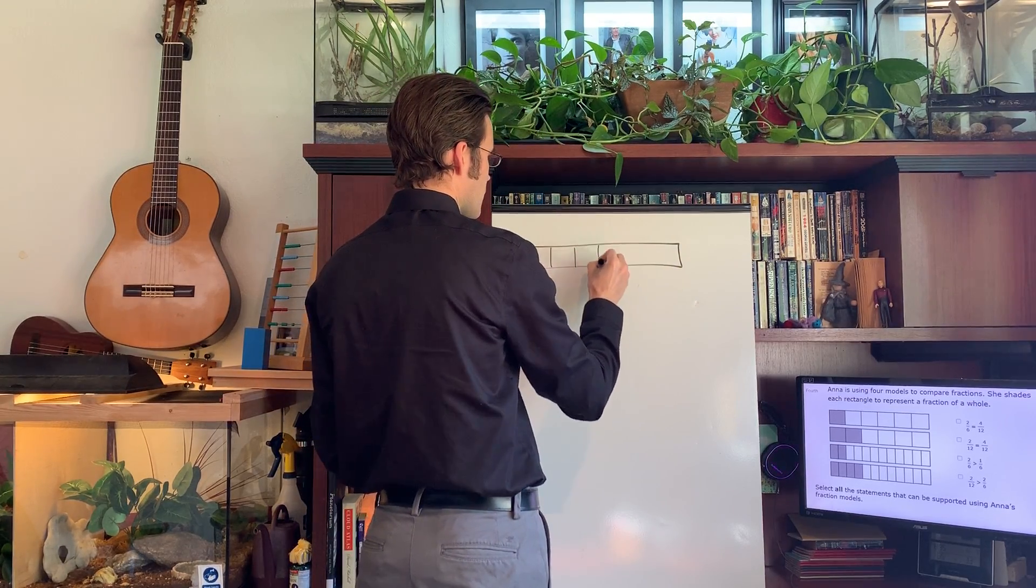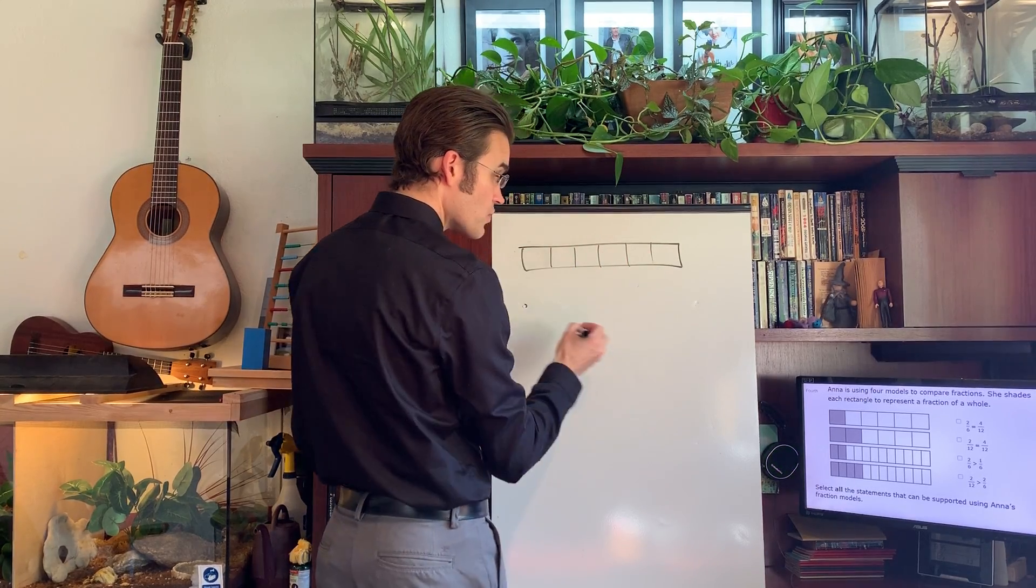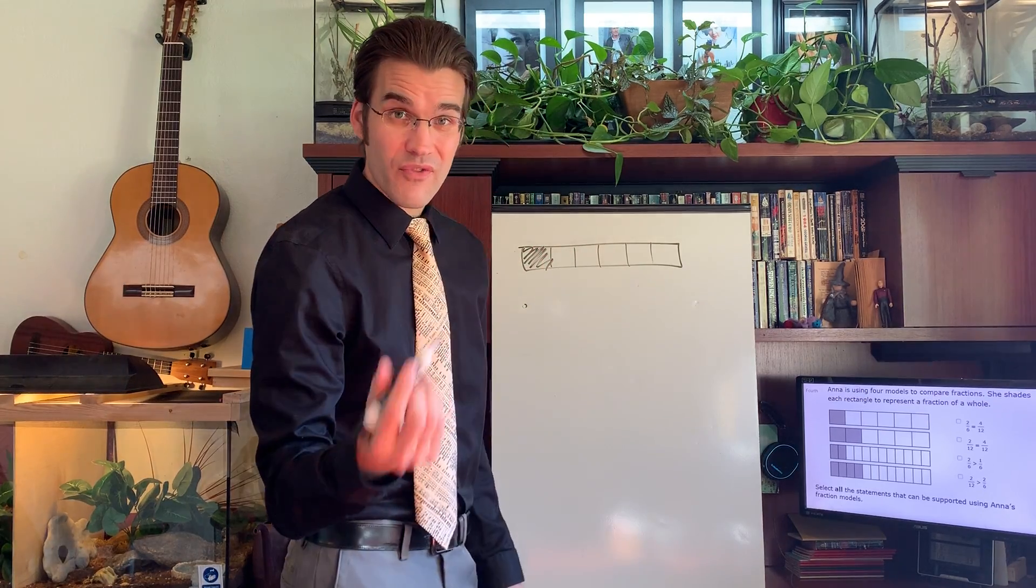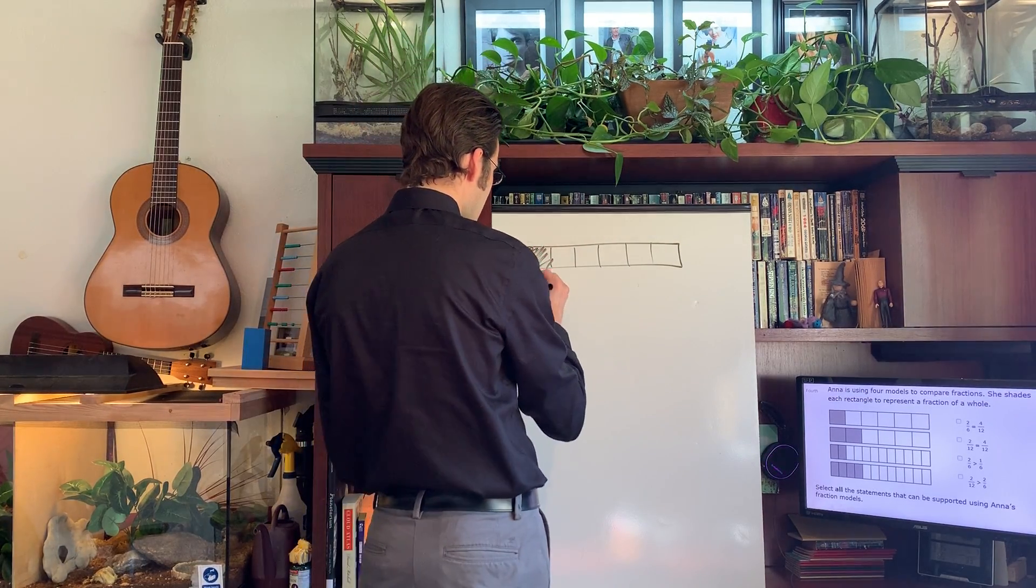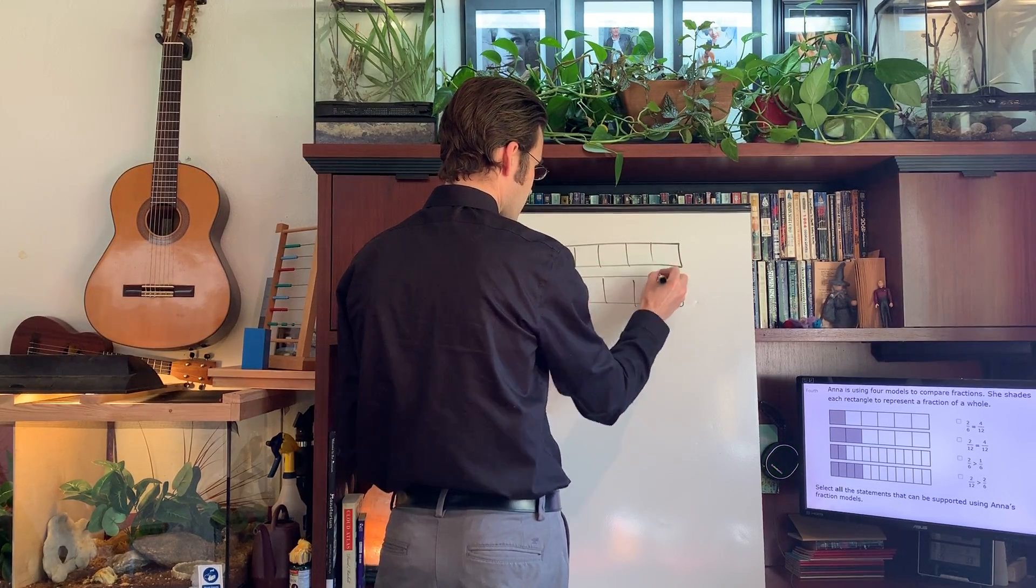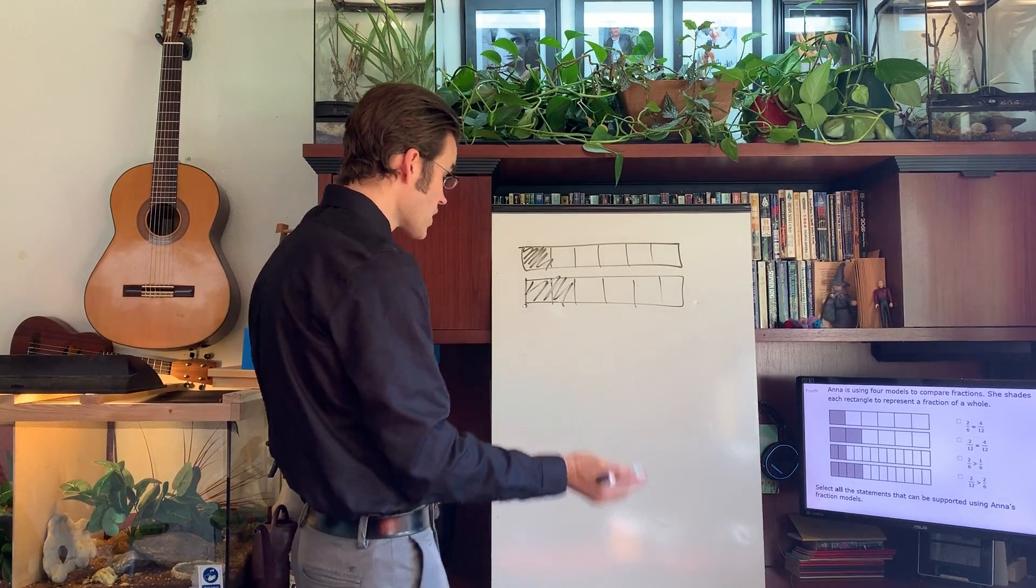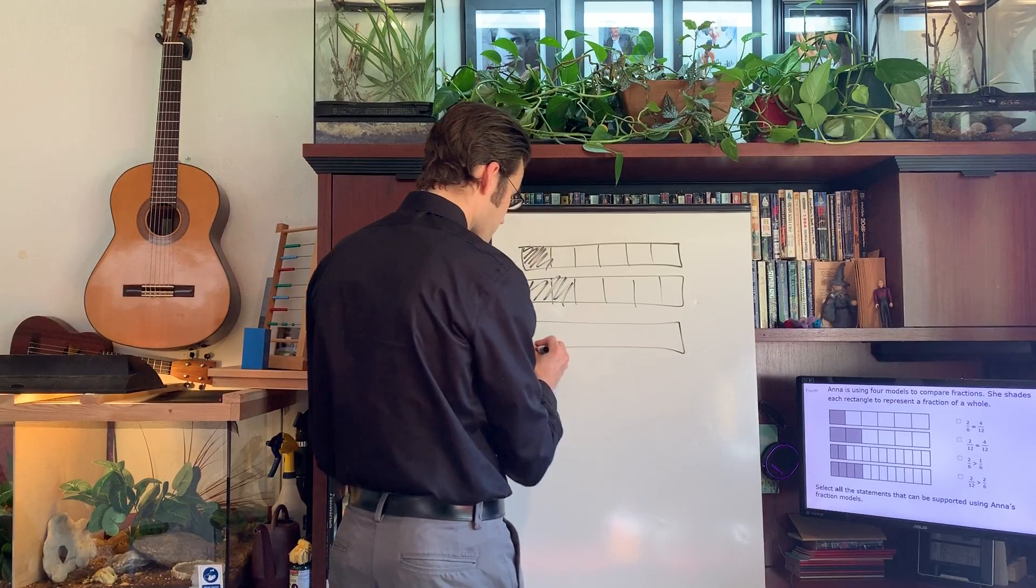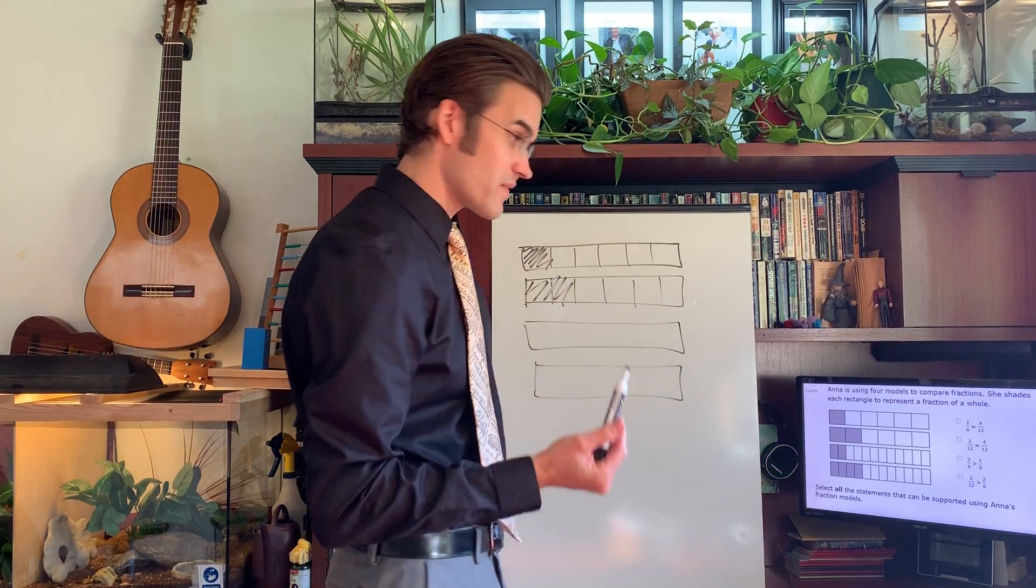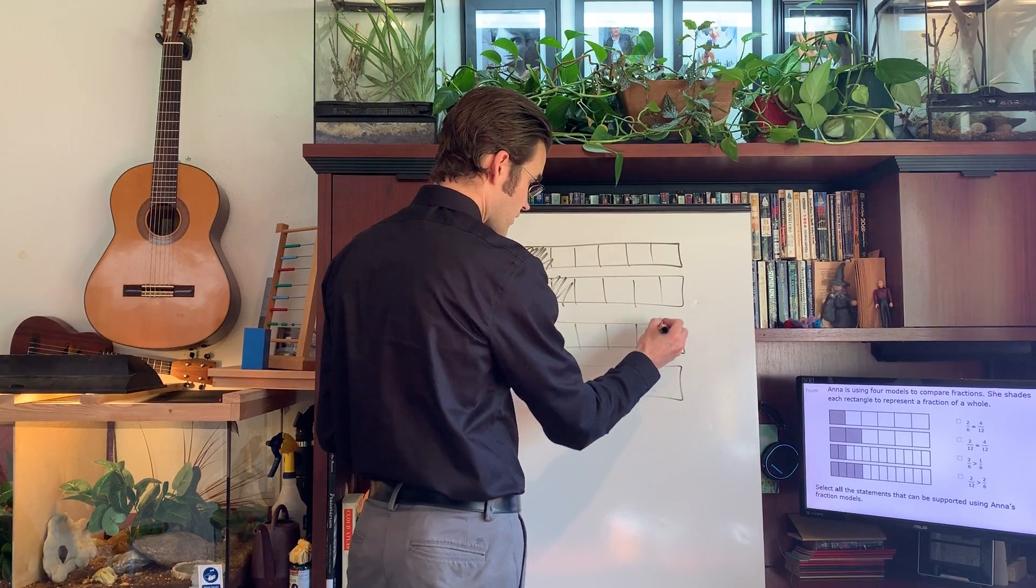One, two, three, four, five, six. So one of these is filled in, which would be a fraction of one sixth. Then if I have another one down here, one, two, three, four, five, two are filled in, so it's two sixths. We also have two more which are twelfths. My black pen is finally running out. One, two, three, four, five...